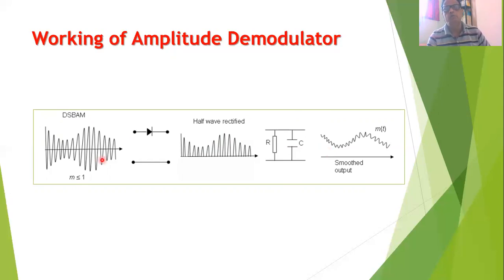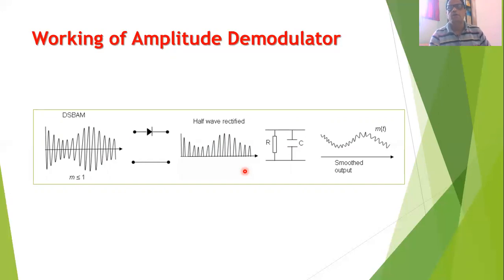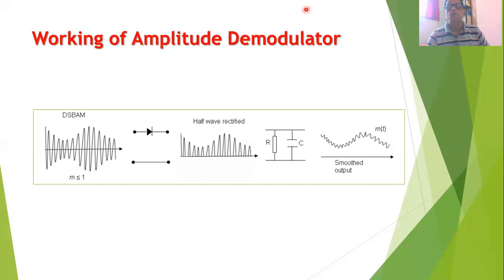In this circuit, the modulated signal is applied at the input and the original baseband signal is obtained at the output, which is why it is called a demodulator or detector circuit. Thank you for viewing the session — hopefully you have understood the working of modulator and demodulator in amplitude modulation. In the next session we will start with another topic. If you have any queries, you can write to me or ask in the discussions.